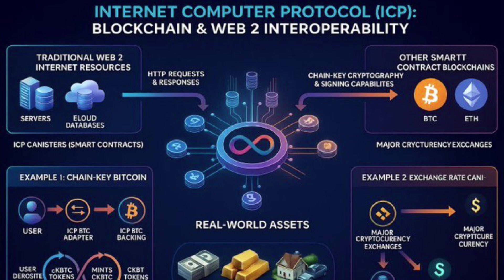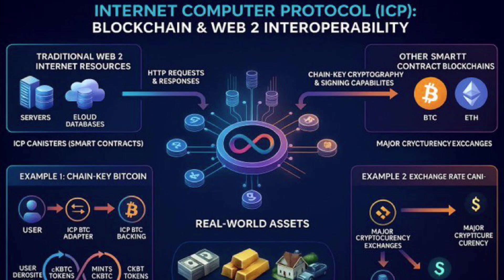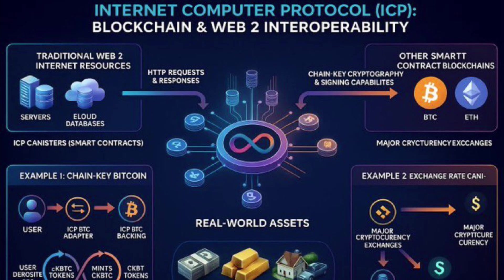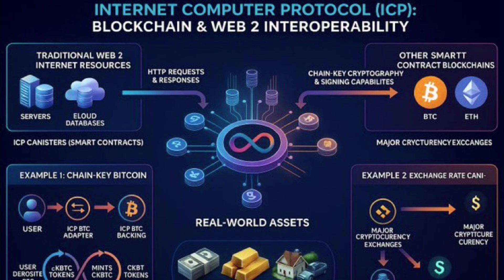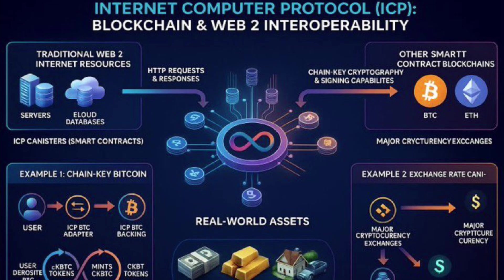This diagram captures why the Internet Computer Protocol ICP is structurally different from every other blockchain. It natively connects smart contracts inside canisters — encrypted canisters — to both Web2 infrastructure and external blockchains, without bridges, wrappers, or trusted intermediaries. ICP canisters can make direct HTTP requests to traditional servers and cloud databases, while chain key cryptography allows them to sign and interact directly with networks like Bitcoin and Ethereum.